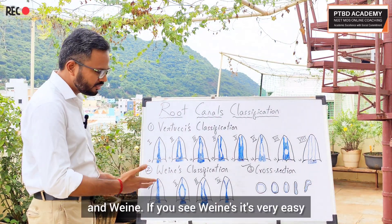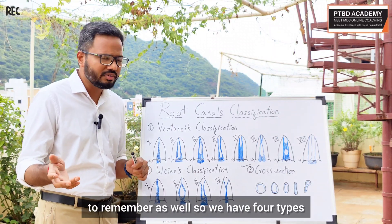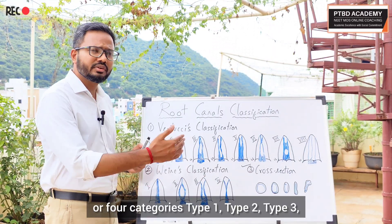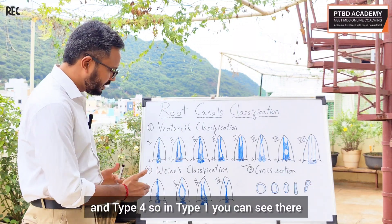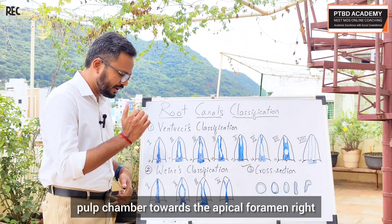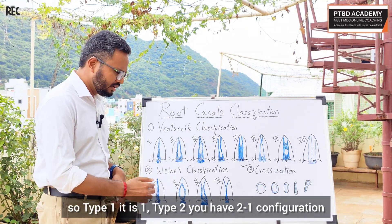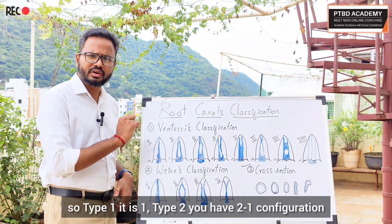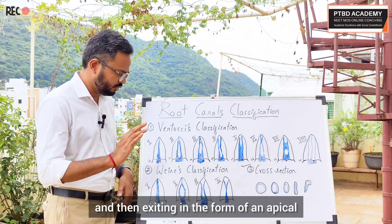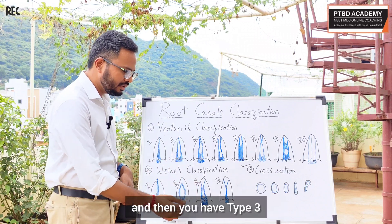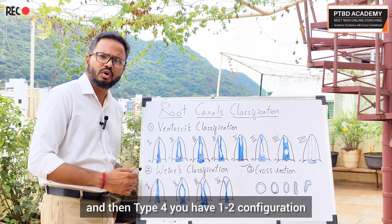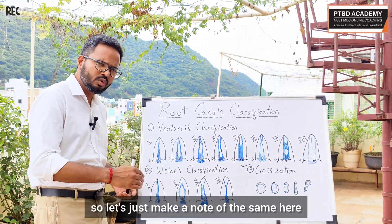Next, we have the Weine classification, which has four types. In type 1, there is a single canal extending from the pulp chamber to the apical foramen — configuration: 1. Type 2 has a 2-1 configuration: two canals merging into one and then exiting through the apical foramen. Type 3 has a 2-2 configuration. And type 4 has a 1-2 configuration.